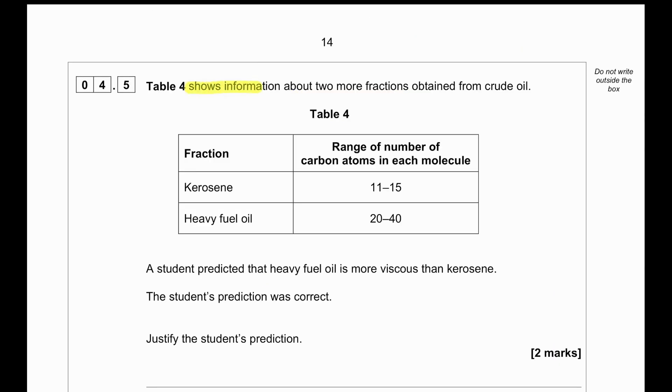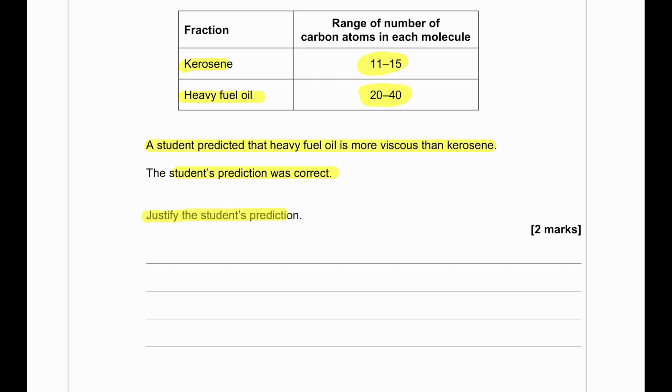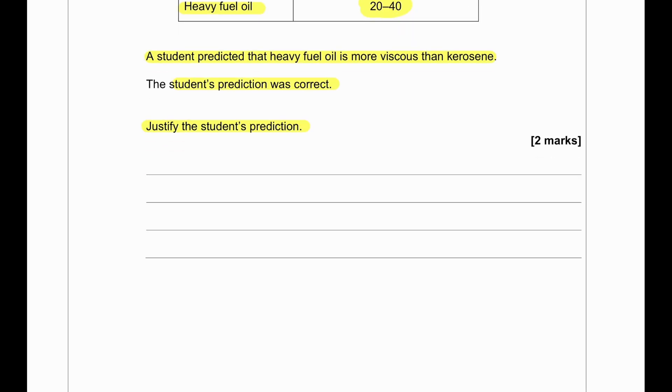Table 4 shows information about two more fractions obtained from crude oil. You can see kerosene, which contains between 11 and 15 carbons, and heavy fuel oil, which consists of between 20 to 40 carbons in the chains. The student predicted that heavy fuel oil is more viscous than kerosene. The student prediction was correct. Justify the student's prediction. The heavy fuel oil contains more carbon per molecule. As the molecular size increases, the viscosity increases as well. The heavy fuel oil has larger molecules compared to that of kerosene. The larger molecules have stronger intermolecular forces, which is why it is more viscous.